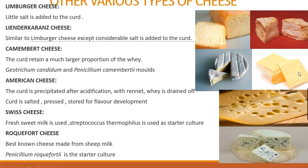American cheese is produced by precipitating the curd through acidification with rennet; the whey is drained off and the curd is salted. The cheese is then stored and gradually develops flavor due to slow bacterial action. The flavor depends on its age — the older the cheese, the greater the decomposition of protein into amino acids, which sharpens the flavor.